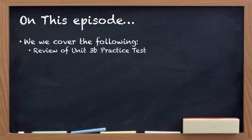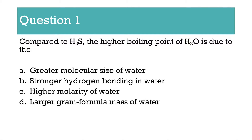So this is going to cover the 3B practice test that you guys have access to. Question number one says, compared to H2S, the higher boiling point of H2O is due to... At this point of the year, if you see words like morbidity or gram form in the answers, we haven't talked about those. So don't start inventing new things during the test. Then we're talking about molecular size of water, hydrogen bonding of water.